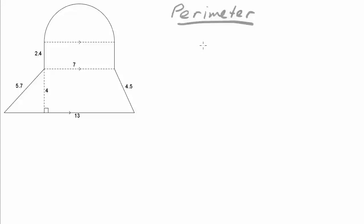The first thing we need to understand is that not all of these measurements are going to be included in the perimeter. This seven and this four are measurements that we needed to calculate its area and they're inside the shape. They're not part of the outside boundary.